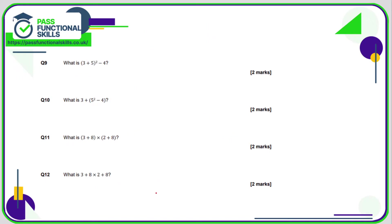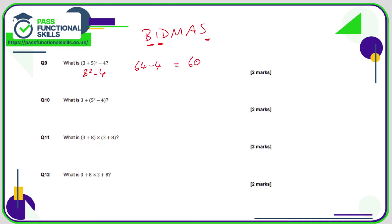Question 9 — I'll write BIDMAS to remember the order of operations. Here we have brackets, indices, and subtraction. Brackets first: inside is 3 plus 5, so the question becomes 8 squared take away 4. Next, we do the indices: 8 times 8 is 64, so 64 minus 4 is 60.